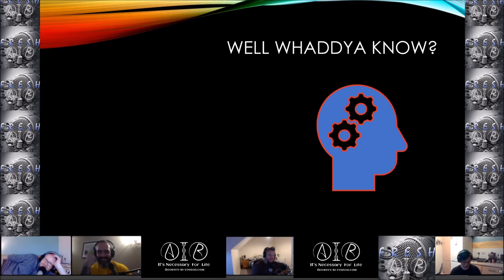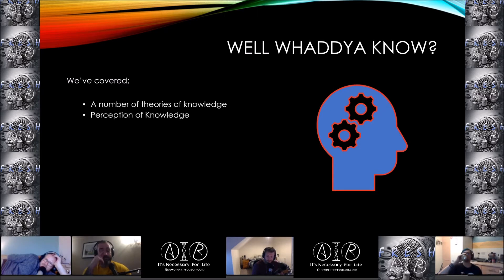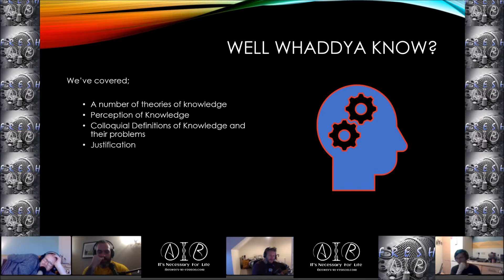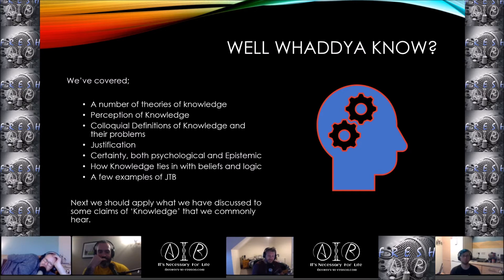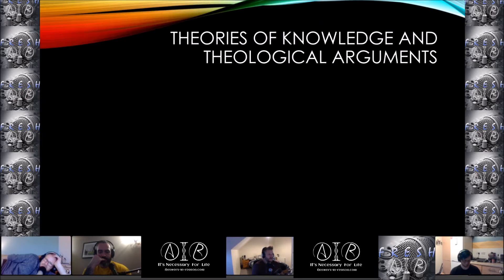So far we've covered: a number of theories of knowledge; perception of knowledge; colloquial definitions of knowledge and their problems; justification; certainty — both psychological and epistemic; how knowledge ties in with beliefs and logic; and a few examples of the justified true belief. Next, we should apply what we have discussed to some claims of knowledge that we commonly hear.